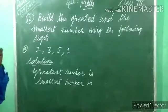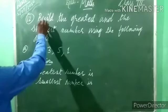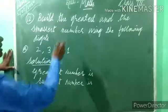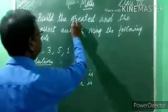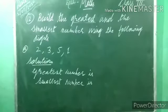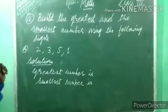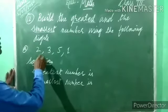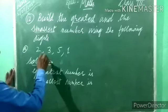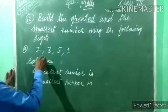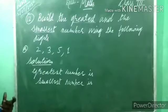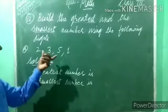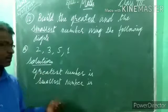Now, look at the 12th example. What is asked? Build the greatest and the smallest number using the following digits. Build means to write or to construct — build one greatest number and one smallest number. The digits given are 2, 3, 5, and 1 — don't read that as 2315; after every digit a comma is given, so they are four separate digits. From those digits, we have to write one greatest and one smallest number.